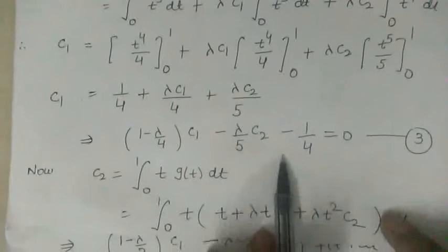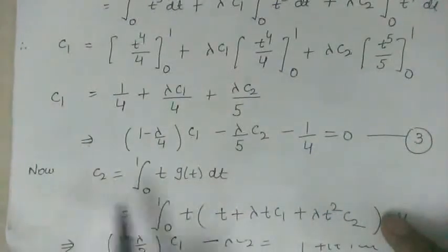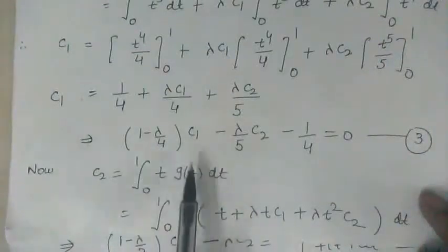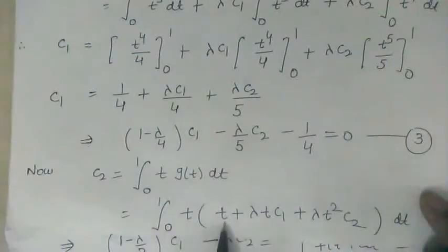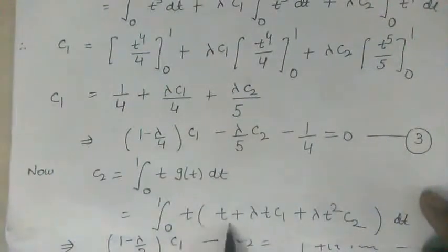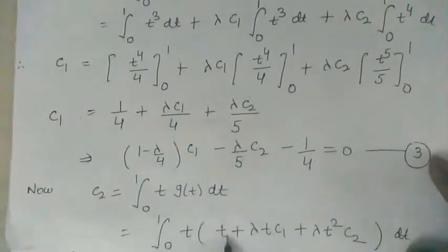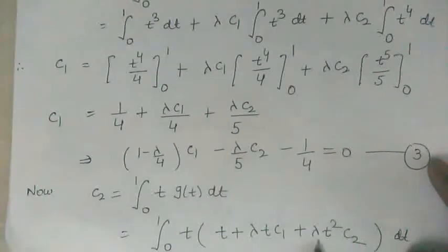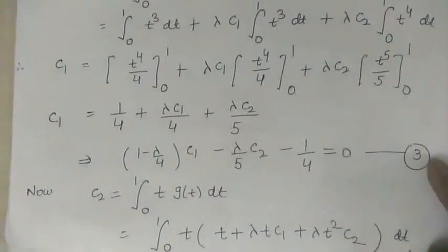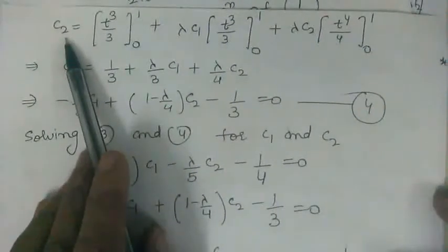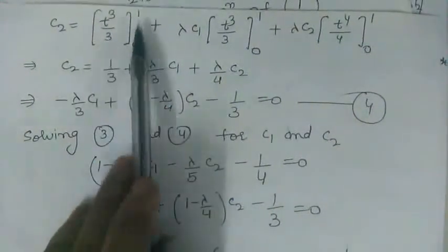Now let us solve for c₂. We have c₂ = ∫₀¹ t g(t) dt. Substituting the value of g(t) from equation 2, we get ∫₀¹ t(t + λt c₁ + λt² c₂) dt. Simplifying this integral gives c₂ = [t³/3]₀¹ plus additional terms.